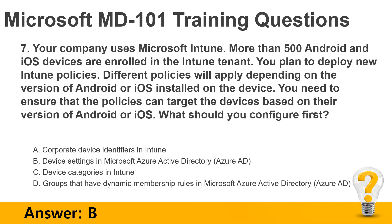Question 7. Your company uses Microsoft Intune. More than 500 Android and iOS devices are enrolled in the Intune tenant. You plan to deploy new Intune policies. Different policies will apply depending on the version of Android or iOS installed on the device. You need to ensure that the policies can target the devices based on their version of Android or iOS. What should you configure first?